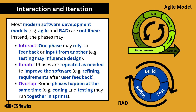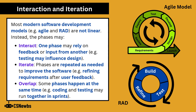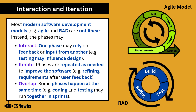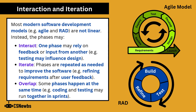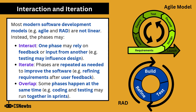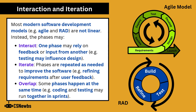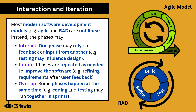Most modern software development models such as Agile and RAD are not linear. Instead, the phases may interact, iterate and overlap. With interaction, one phase may rely on feedback or input from another — for example, in the Agile model, testing may influence the next round of design. Phases often iterate and are repeated as needed, for example refining requirements after user feedback. Phases can also overlap, meaning they happen at the same time — for example, coding and testing may run together in sprints in the Agile model.